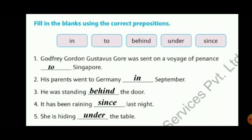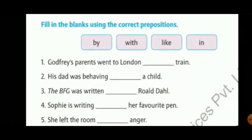Sentence 5: 'She is hiding ___ the table.' Answer: under — she is hiding under the table. The next set of fill-in-the-blank prepositions uses options: by, with, like, in. 'Godfrey's parents went to London ___ train.' Answer: by train. 'His dad was behaving ___ a child.' Answer: like a child. 'The BFG was written ___ Roald Dahl.' Answer: by Roald Dahl. 'Sophie is writing ___ her favorite pen.' Answer: with. 'She left the room ___ anger.' Answer: in anger.